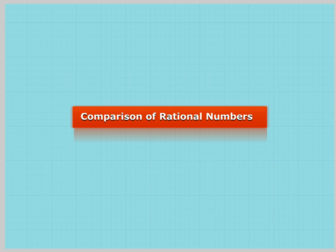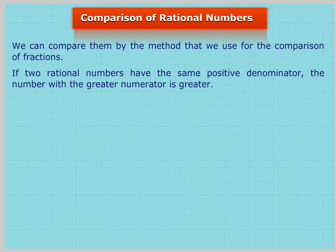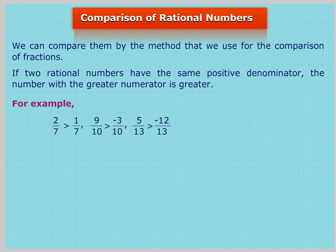COMPARISON OF RATIONAL NUMBERS. We can compare them by the method that we use for the comparison of fractions. If two rational numbers have the same positive denominator, the number with the greater numerator is greater. For example, 2/7 is greater than 1/7; 9/10 is greater than -3/10; 5/13 is greater than -12/13.